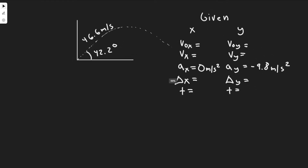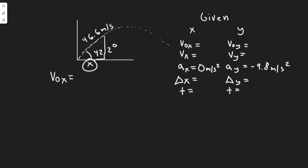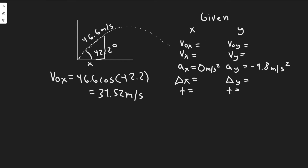To find the x-component of initial velocity, take the magnitude times cosine of the angle: 46.6 times cosine of 42.2, which gives 34.52 meters per second. For the y-component, use sine — since sine is opposite over hypotenuse — so 46.6 times sine of 42.2 equals 31.30 meters per second.